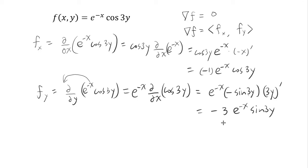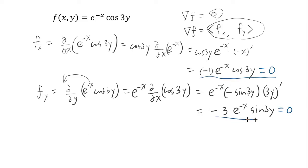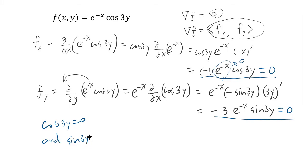So what are we looking for? We're looking for the place where the gradient is equal to 0 — meaning I need each of these partial derivatives to equal 0. For f_x to equal 0, since exponential functions are never 0, cosine(3y) must equal 0. And for f_y to equal 0, sine(3y) must equal 0.